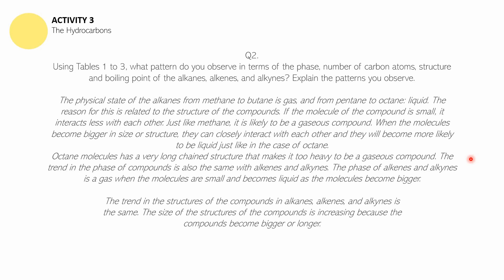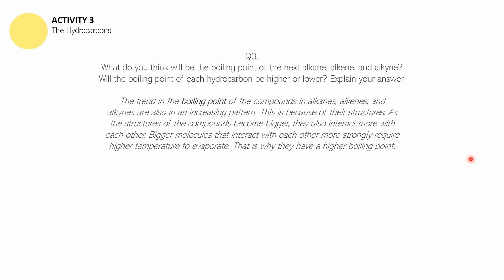The answer to question number three: The trend in the boiling point of the compounds in alkanes, alkenes, and alkynes is also an increasing pattern — starting from very negative values up to positive. This is because as the structures of the compounds become bigger, they also interact more with each other. Bigger molecules that interact more strongly require higher temperatures to evaporate, so they have higher boiling points. Smaller molecules have less interaction and lower boiling points.